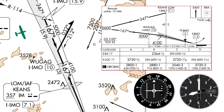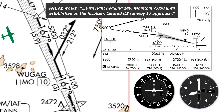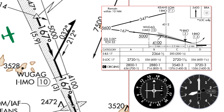We're on a right base leg for the final approach course. We get our approach clearance, which sounds like this: Turn right heading 140, maintain 7,000 until established on the localizer, cleared ILS runway 17 approach. The first crossing altitude on the approach course is 5,000 feet at WUGAG, 2,000 feet below our current altitude, so we'd love to start our descent to get down there.